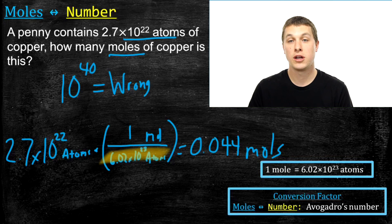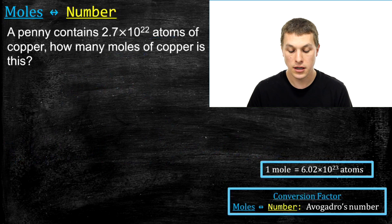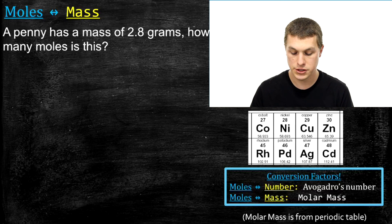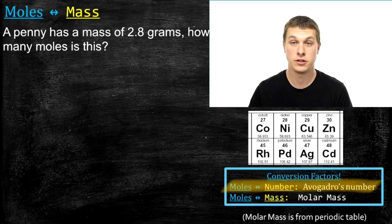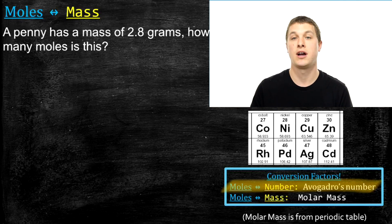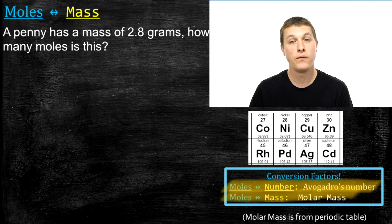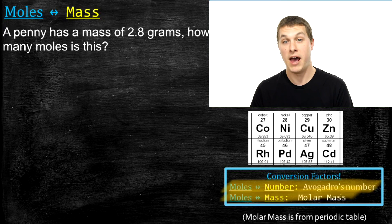Now we're going to go from talking about moles and number of atoms to going between moles and mass, and here we use molar mass. When you're going between moles and number of things — whether atoms, molecules, or anything — we use Avogadro's number. When we go between moles and mass, we use molar mass. Going between moles and number: use Avogadro's number. Going between moles and mass: use molar mass.